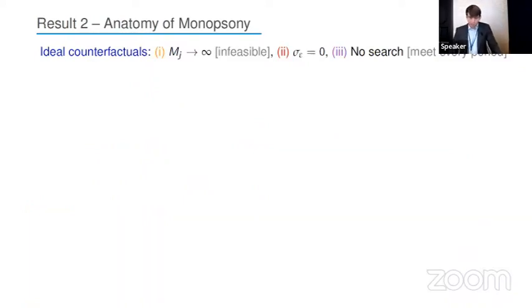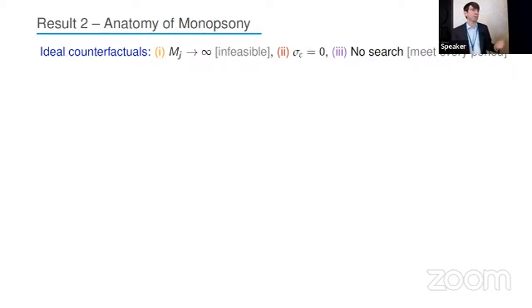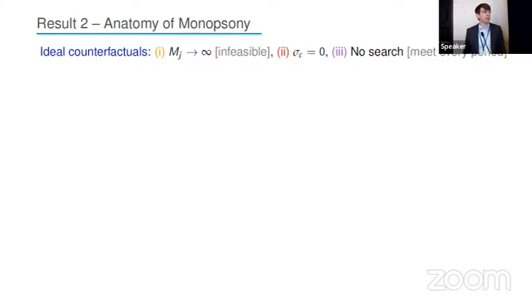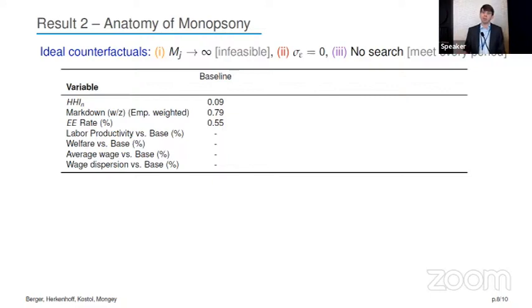Now let me talk about our key counterfactuals, where we provide a decomposition into the three paradigms. In the baseline economy, the Herfindahl is as calibrated, and the markdown is such that workers take home 79% of what they produce — W over Z is 0.79, a 21% markdown. The EE rate is about half a percent per month, roughly a third of the US rate.